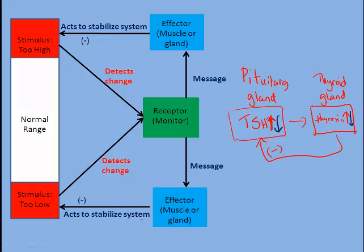When thyroxin levels drop off to another threshold — the lower threshold — the pituitary gland will kick into action again. So if we have a very narrow range of acceptable levels of thyroxin in our blood and those levels begin to creep up, the pituitary gland will actually stop stimulating the thyroid gland so that the level of thyroxin can go back into the normal range. And if the thyroxin levels begin to drop off out of the normal range beyond the threshold, the pituitary gland will kick in and produce more TSH, which will stimulate the thyroid gland to produce more thyroxin. As a result, the level of thyroxin remains pretty constant within a very narrow range. This is a self-correcting mechanism — it's ongoing, the monitoring is constant, and the response to any change is also constant.